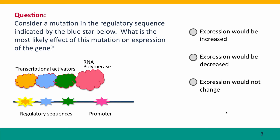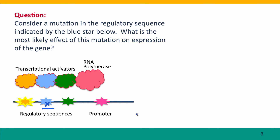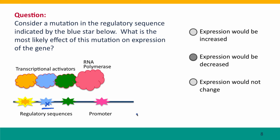Here's a question: consider a mutation in the regulatory sequence indicated by the blue star. What's the most likely consequence on expression of the gene? The most likely consequence is that expression will go down, because changing the sequence of a regulatory binding site means the protein will no longer bind there — it won't recognize the site — and that will interfere with activation of transcription.